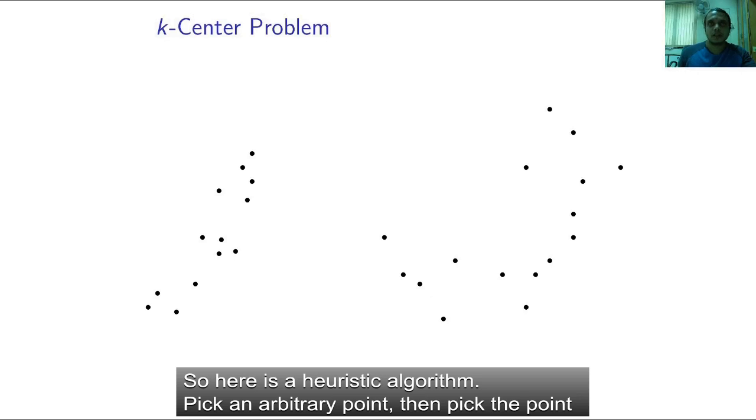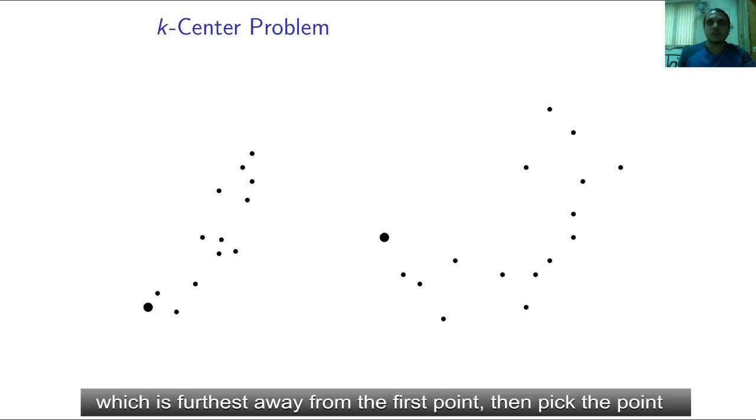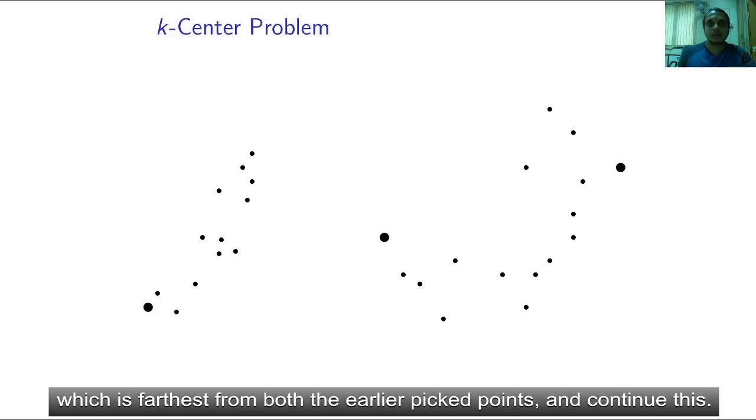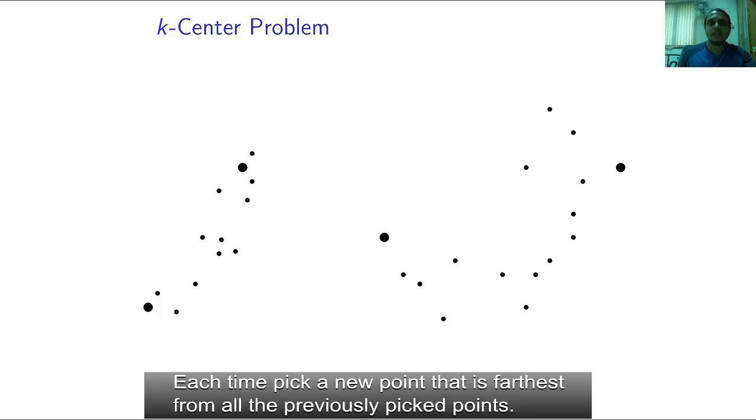So here is a heuristic algorithm. Pick an arbitrary point, then pick the point which is furthest away from the first point, then pick the point which is furthest from both the earlier picked points and continue this. Each time pick a new point that is furthest from all the previously picked points.